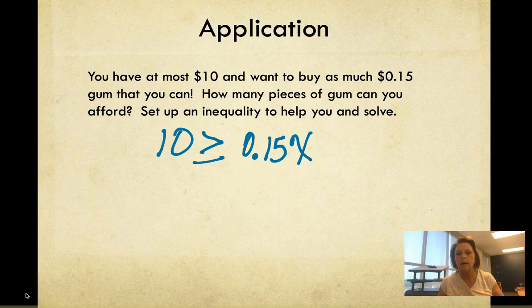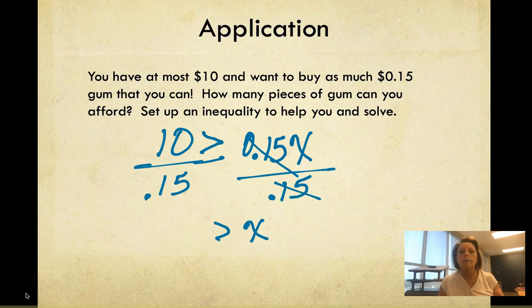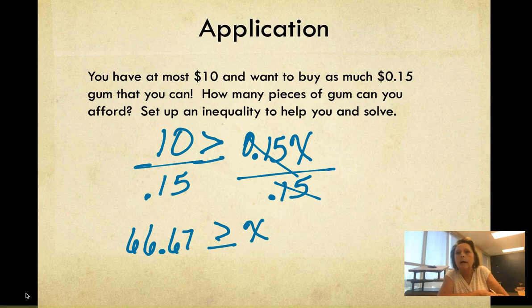This is expensive gum, better taste pretty good. To solve this, I've got multiplication going on there, so I'm going to divide by 0.15. And I get 66.67 is greater than or equal to x. I'm probably going to rewrite this, and I'm going to think, I can't have 66.67 pieces of gum. I've got to buy whole pieces of gum. I can't buy 67 pieces because I don't have enough money, so I'm going to have to round this down to at most 66 pieces of gum.